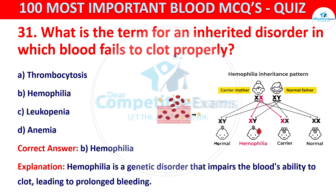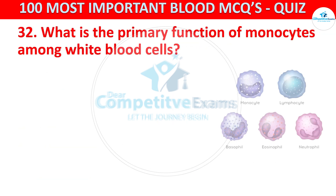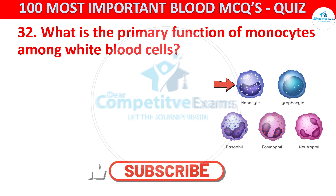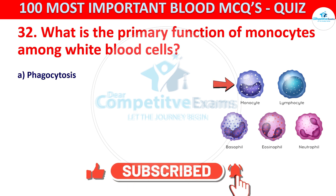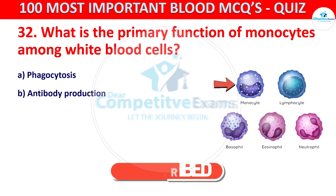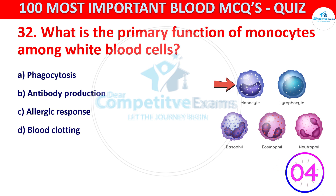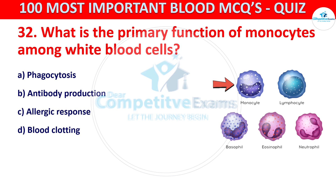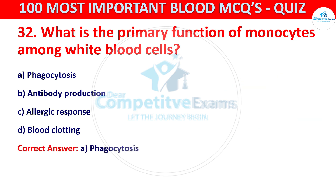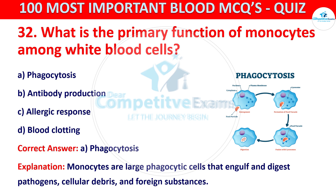Question number 32. What is the primary function of monocytes among white blood cells? Your options are phagocytosis, antibody production, allergic response, or blood clotting. The correct answer is A, that is phagocytosis. Monocytes are large phagocytic cells that engulf and digest pathogens, cellular debris, and foreign substances.